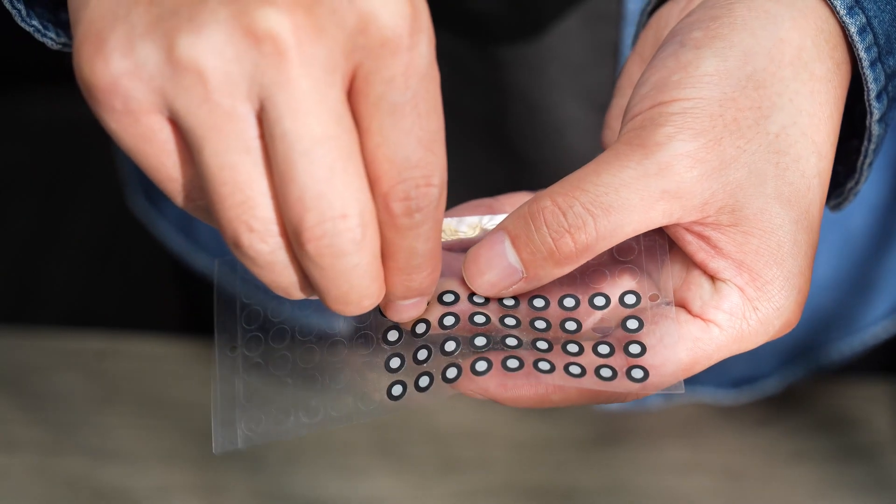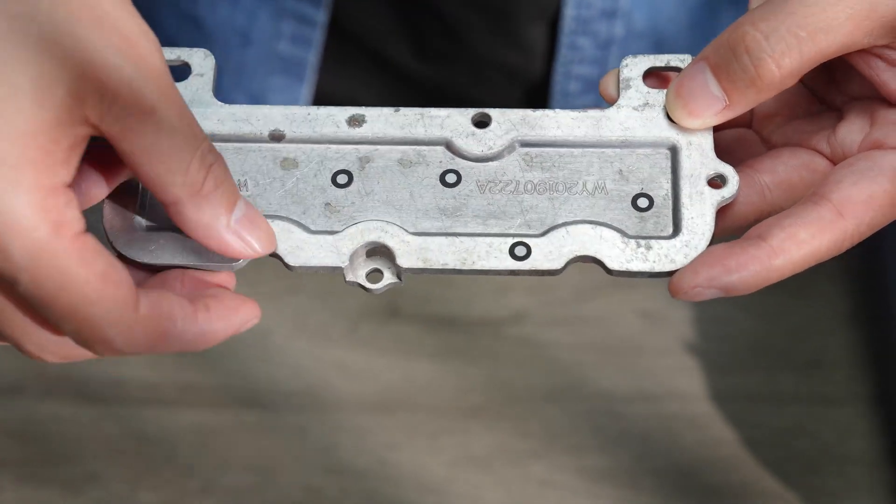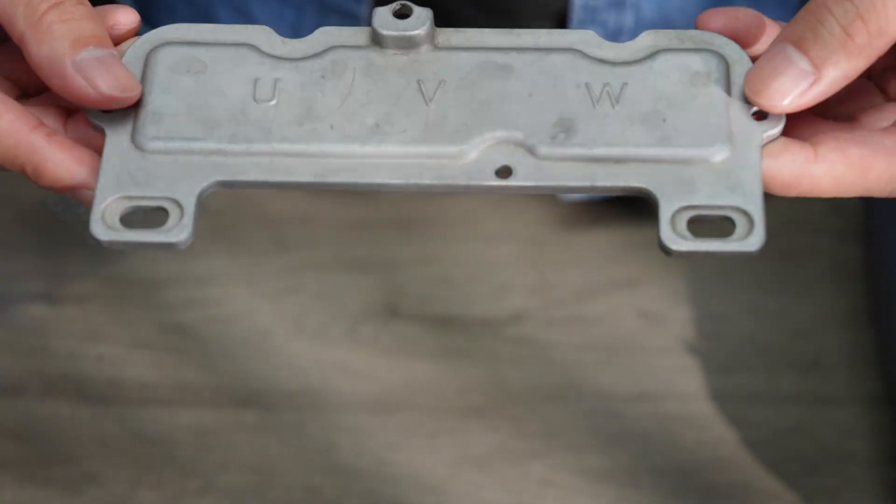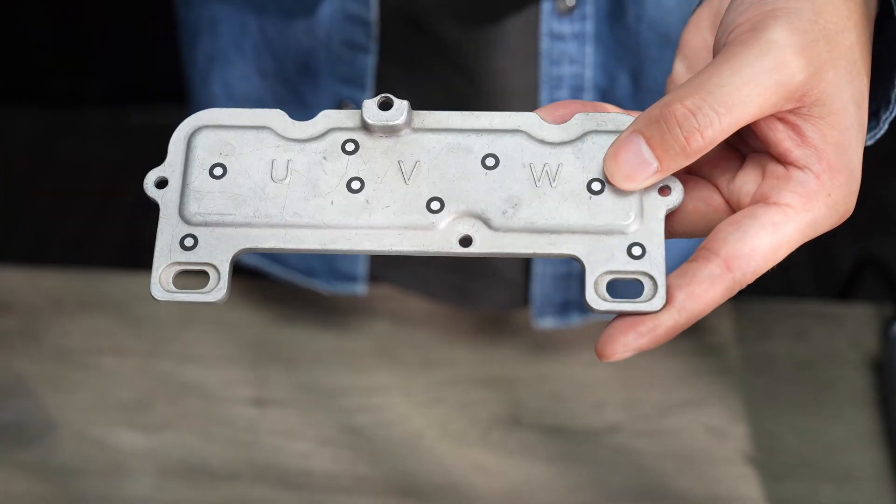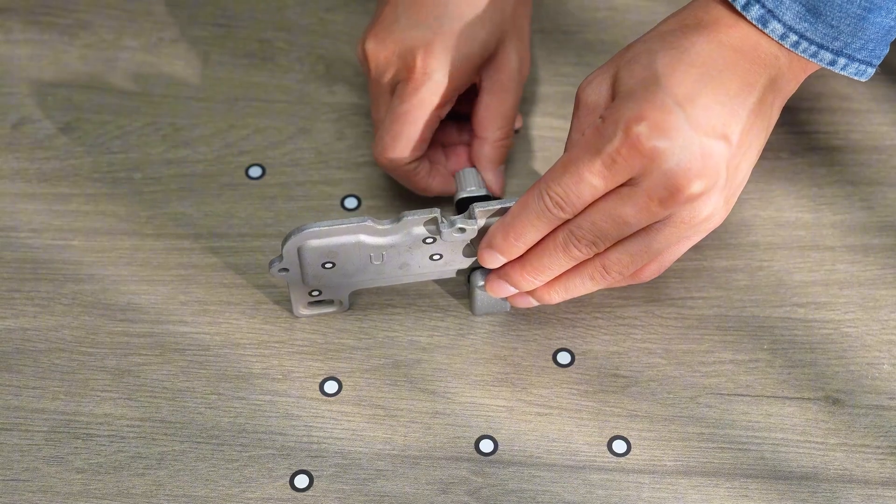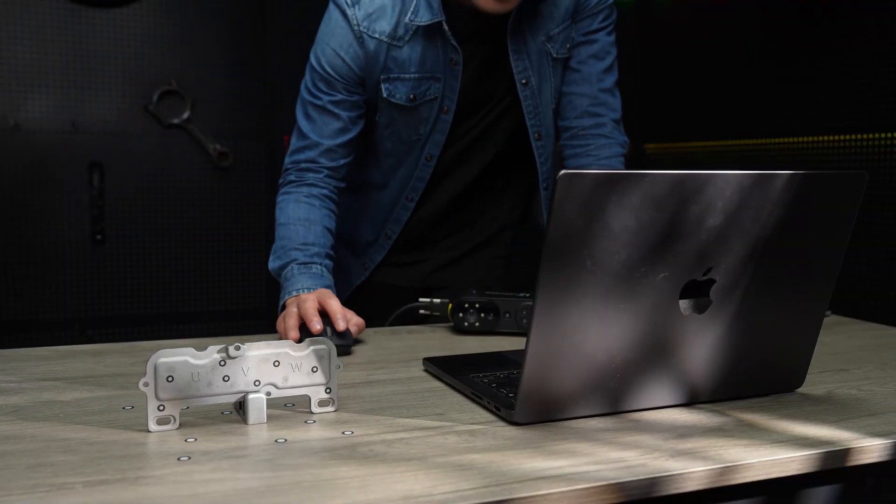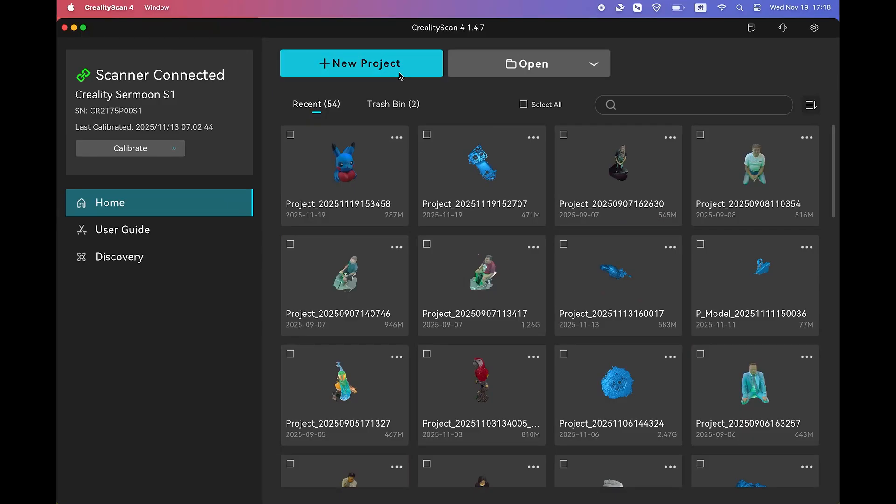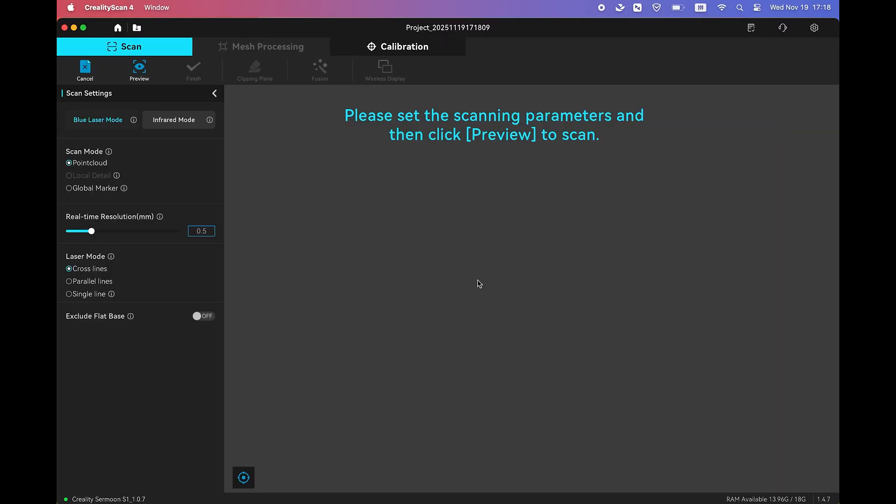The first method is completed in a single scan. Start by sticking some markers on both the front and back surfaces. Then, place the part vertically on a platform that already has markers. Next, select the Global Marker mode in the software.